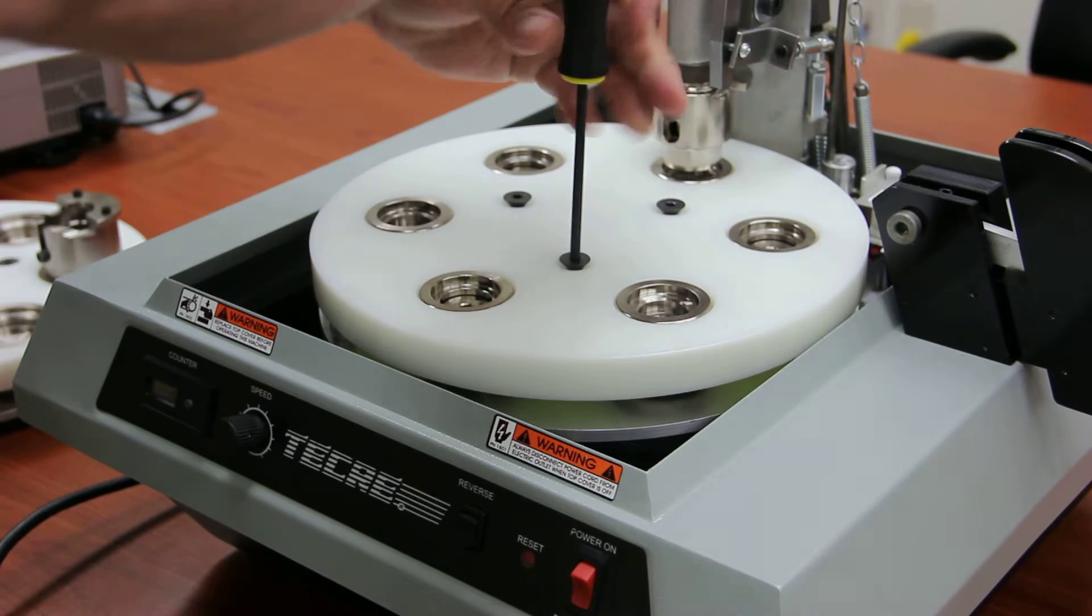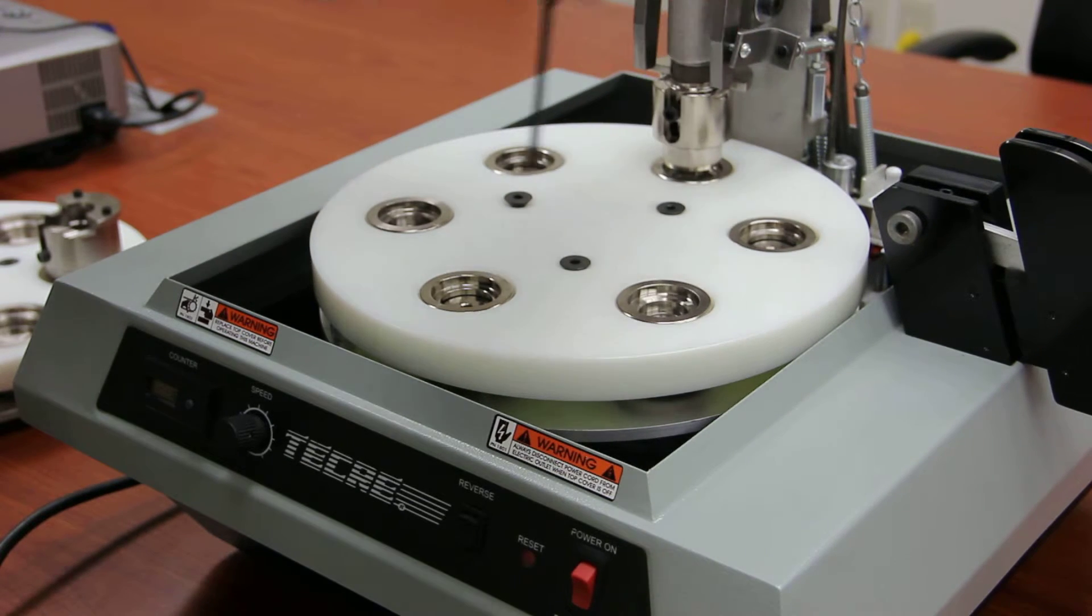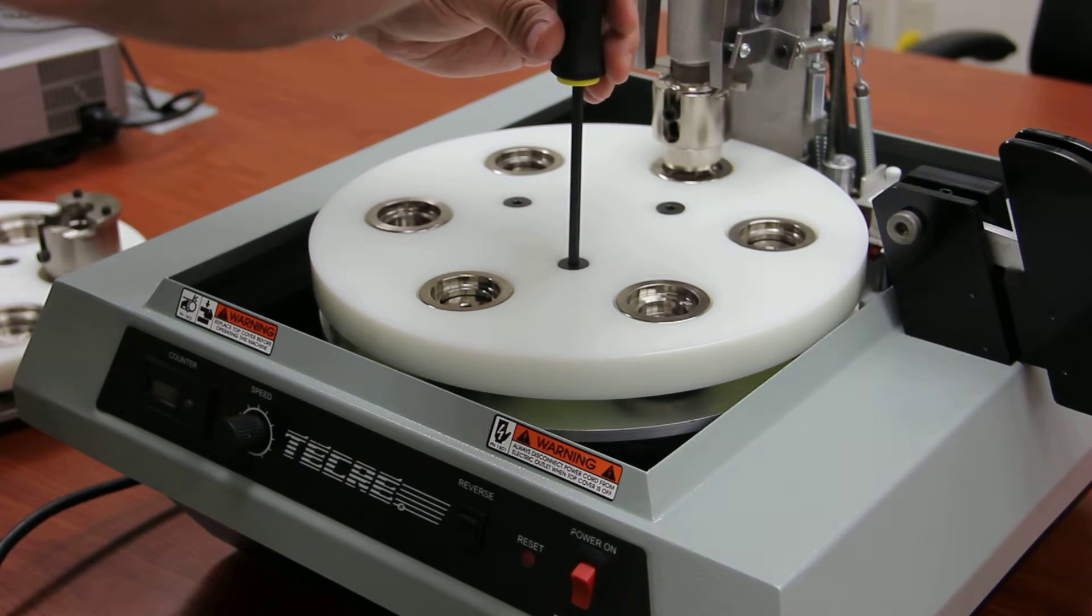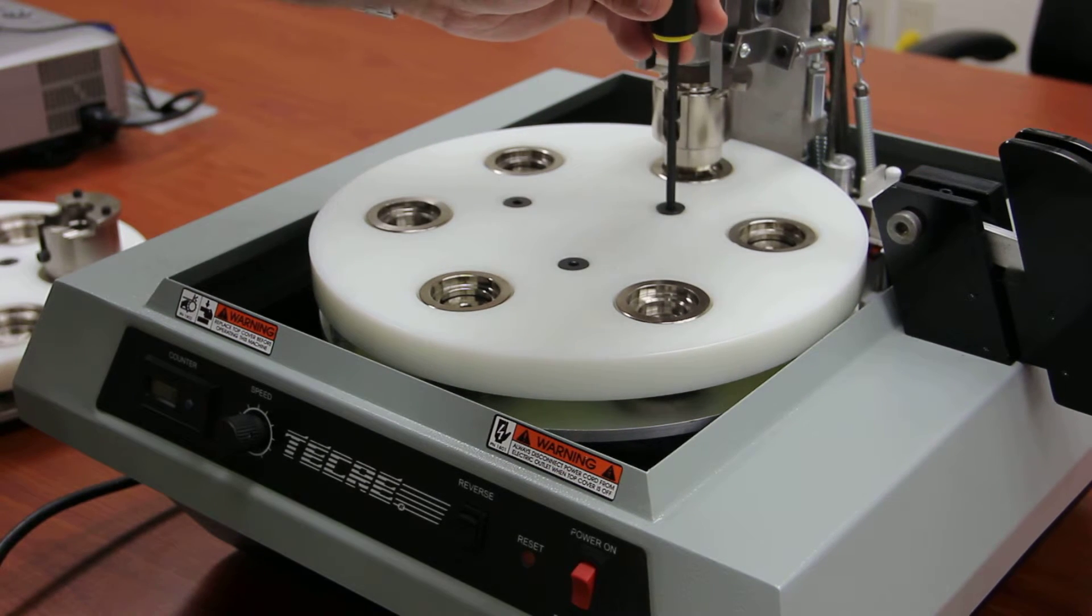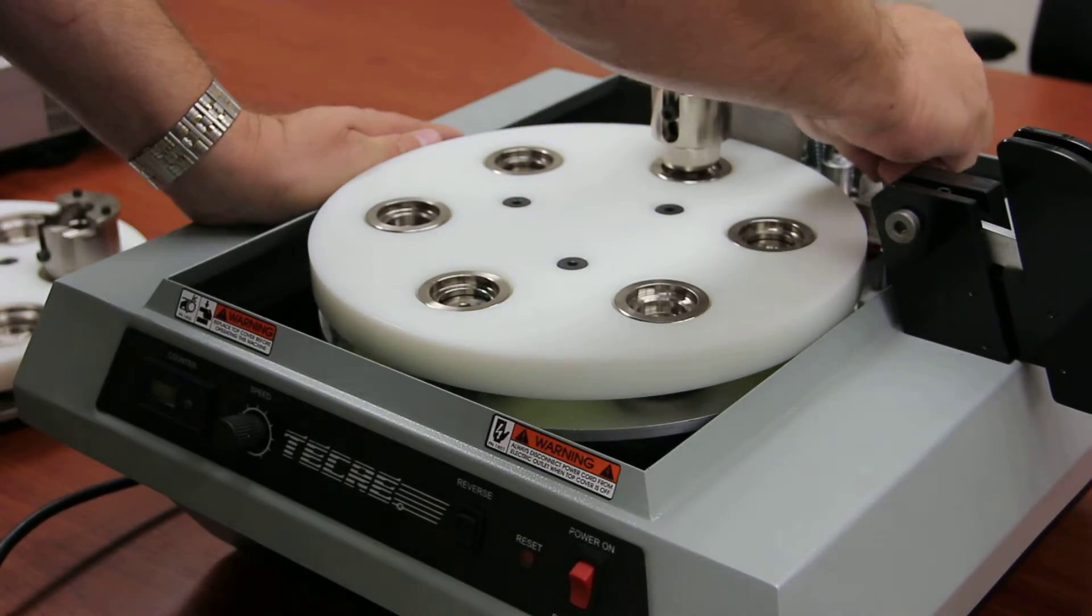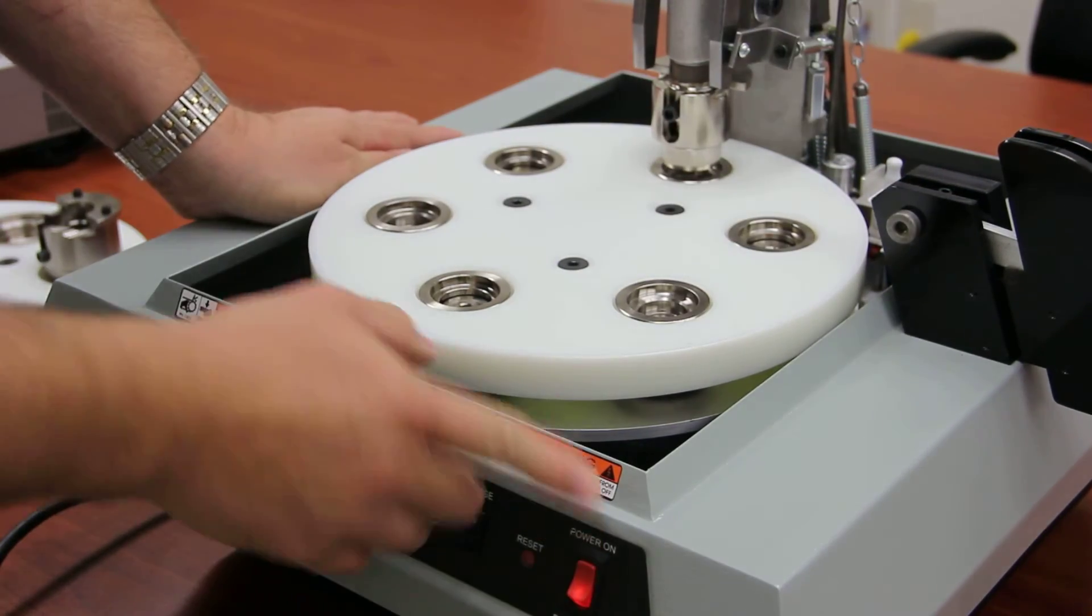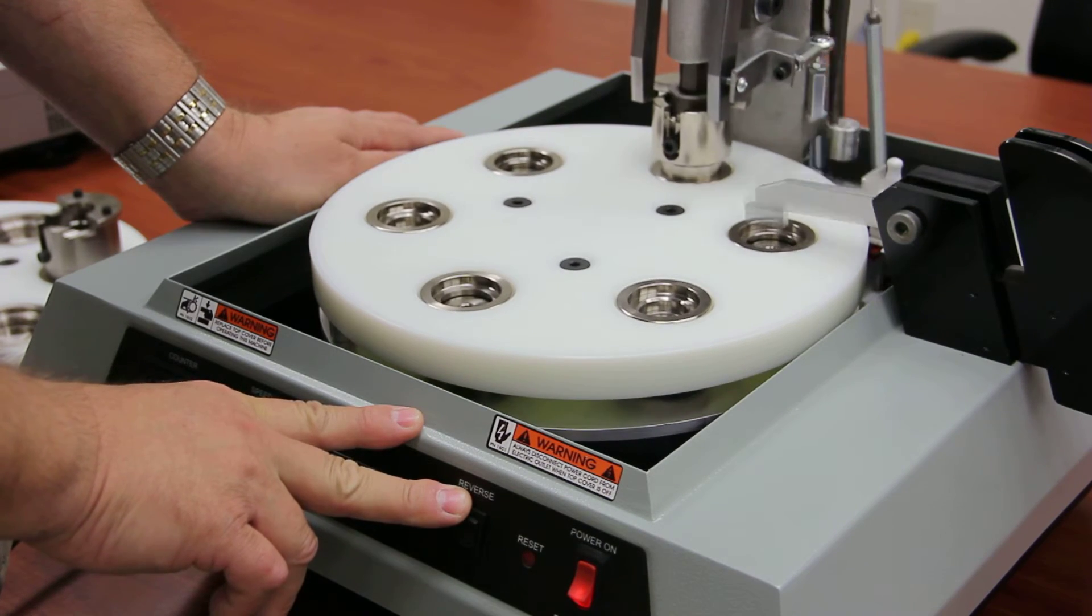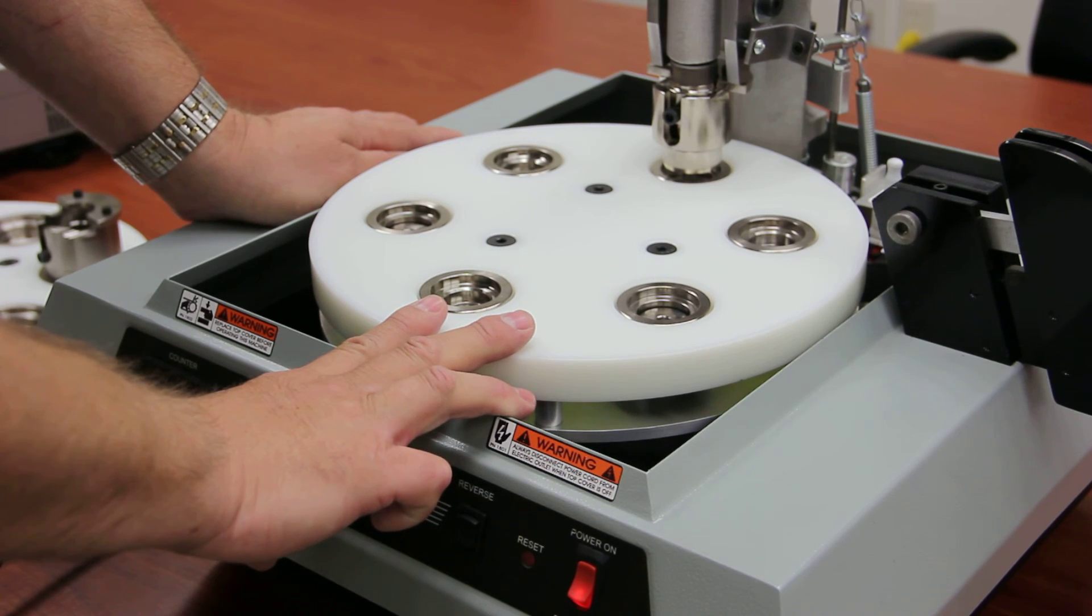Start all three screws and snug them down. These do not need to be tightened as much as the upper die does. Then pull up the white safety switch, turn the power on, and you've successfully changed a die set in the machine.